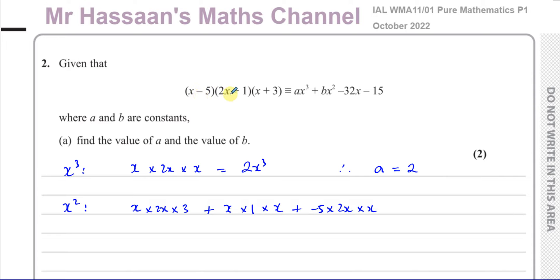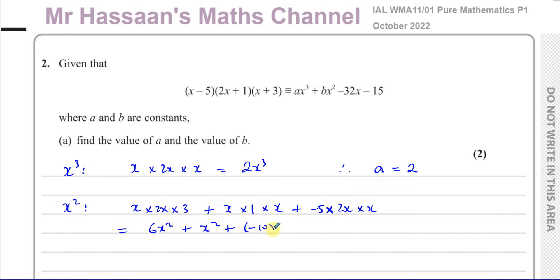So you have x times 2x times 3, plus x times 1 times x, and then minus 5 times 2x times x. Those are the ways of getting x squared terms. This is going to give us 6x squared, plus x squared, minus 10x squared. So you end up with 7x squared minus 10x squared, which is negative 3x squared. Therefore, we can say b is equal to negative 3. So a is equal to 2 and b is equal to negative 3, which means we have expanded the expression.